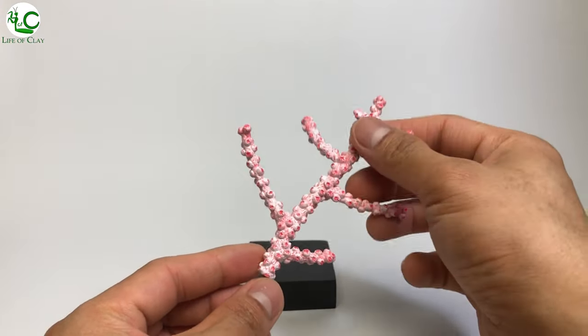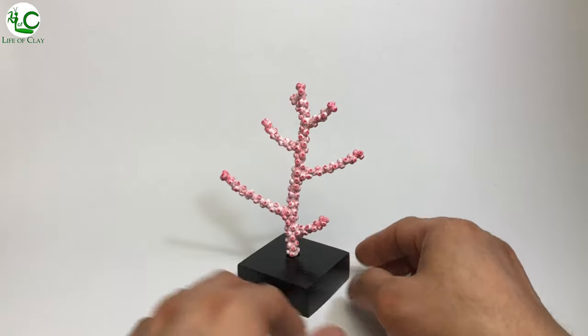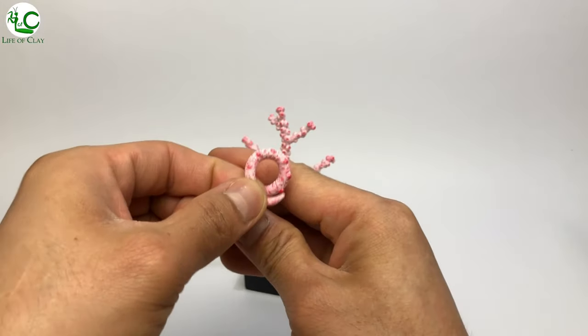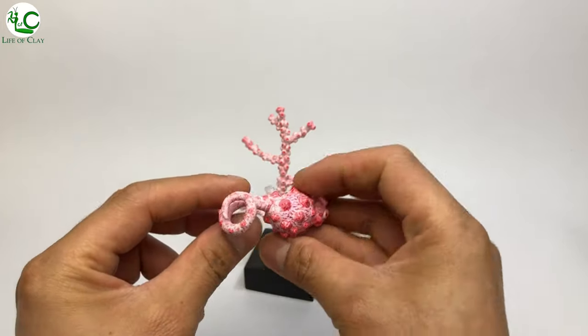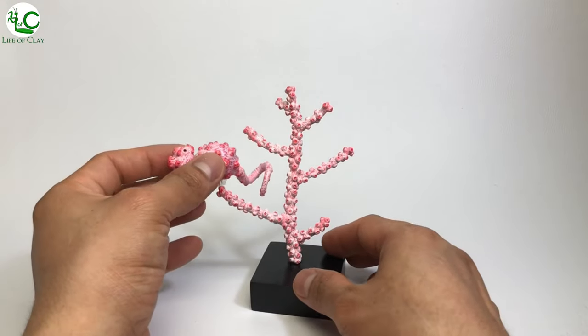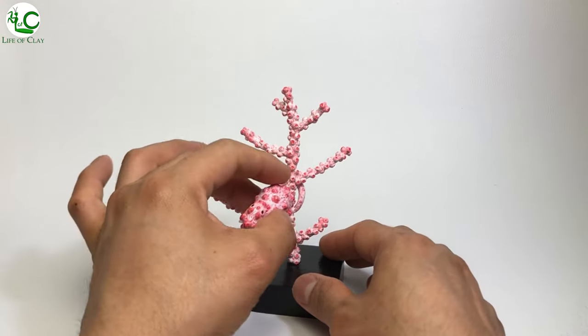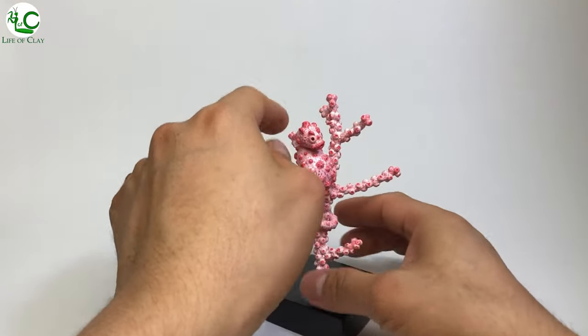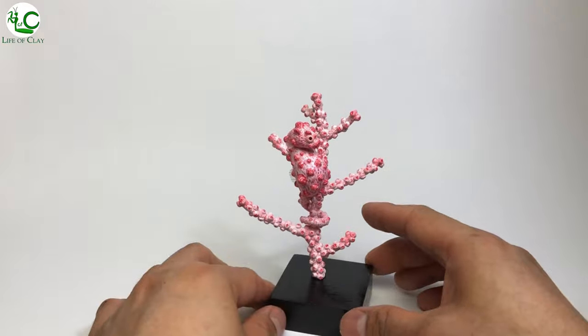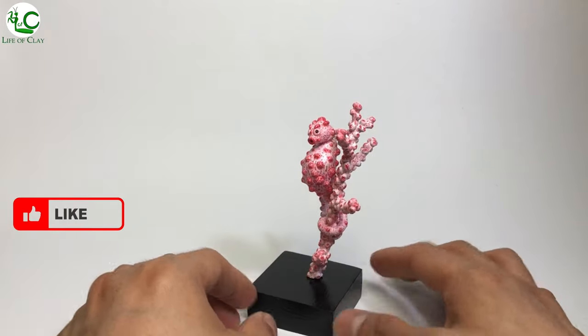And we can now put our pygmy seahorse on its gorgonian coral. CosClay's flexibility makes this seahorse tail coilable and it really makes it grasp well on the coral. So cute, isn't he? And there it is, our pygmy seahorse is finally done. I hope you like it and if you do, please give this video a thumbs up, leave your comments about it and share this video with your friends.